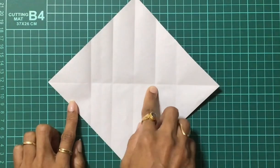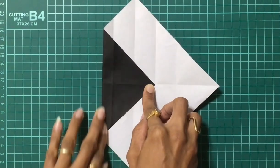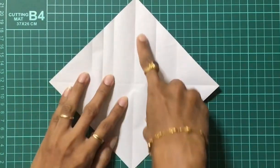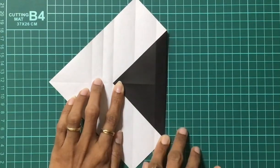Bring the tip to this point which is next to the center point and make a crease. Repeat the same thing on the other side, bringing the tip next to the center point.